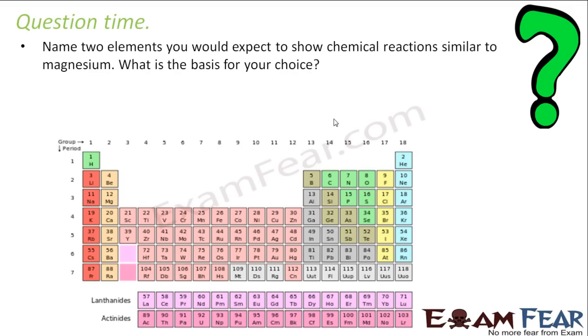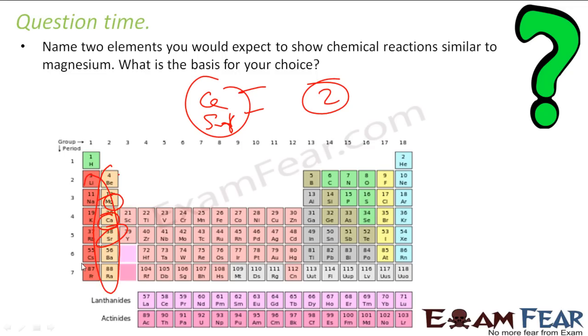Name two elements which you expect to show similar property as magnesium. I have magnesium here. I know that elements in the group will have similar property. So I can pick calcium and beryllium. These two elements will have same chemical property because all these are part of same group and they have a valency of two. So they will have same chemical property because if you take any group, they will have similar chemical property.